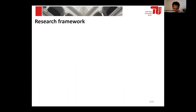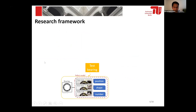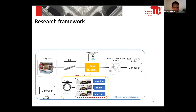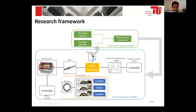This slide shows our research framework. We will start from the modeling of a test bearing, especially the model defect, including defect position, defect shape, and defect number. Besides the test bearing, we also consider the driving motor, the shaft, and the hydraulic loading system. Of course, we will also provide two controllers for both speed and load control. All these components will consist of the virtual bearing test bench. After that, we will use the virtual test bench to analyze the acceleration signal from the bearing to achieve bearing fault diagnosis.